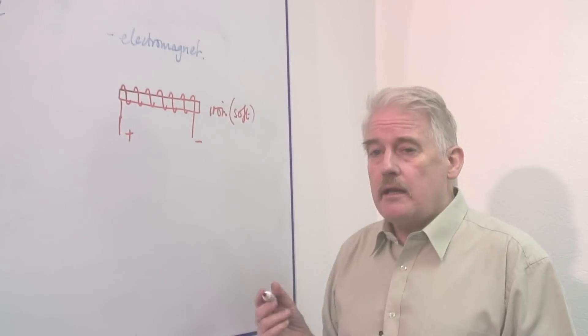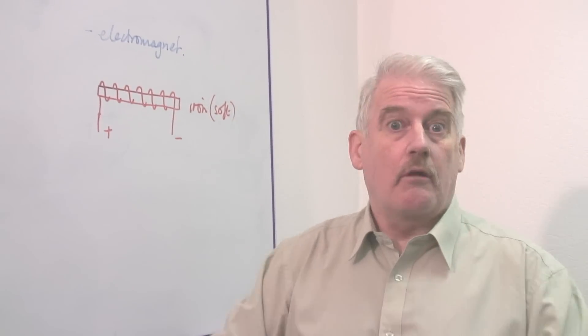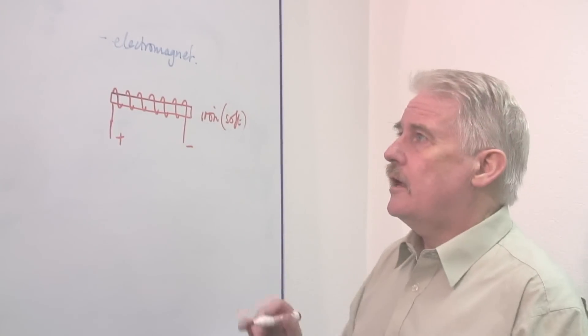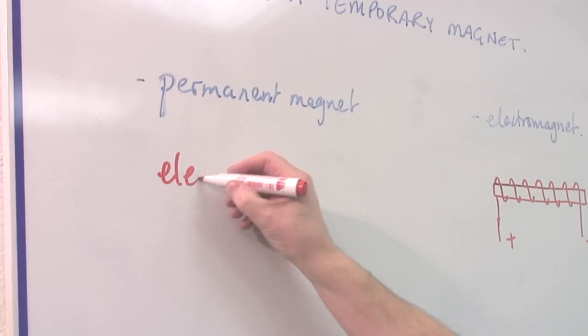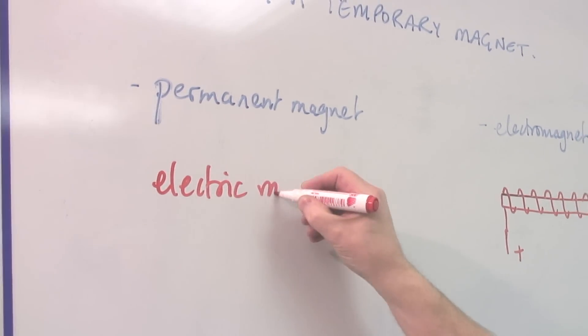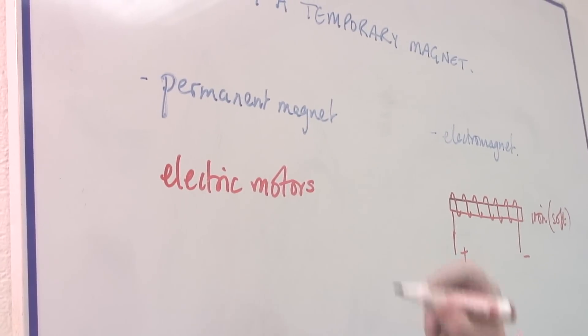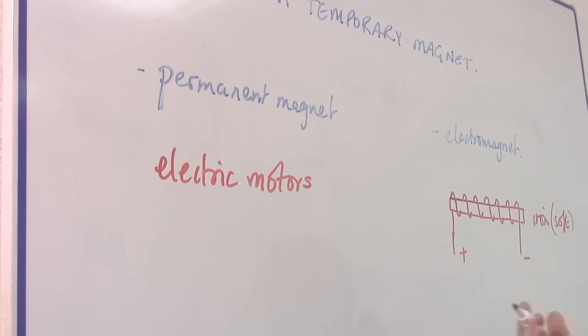Now you can make permanent magnets, weaker permanent magnets, and obviously permanent magnets are used in things like electric motors, because you don't want the magnetism to disappear from the electric motor.